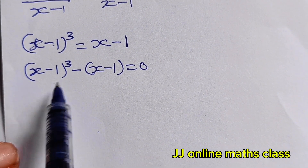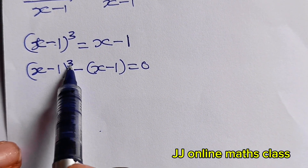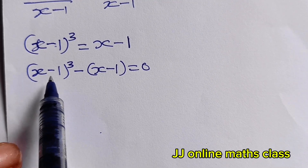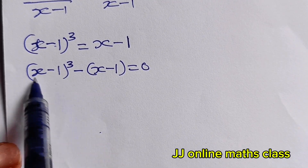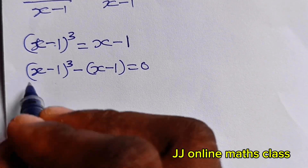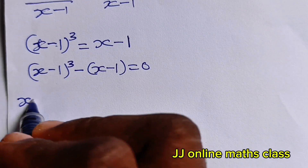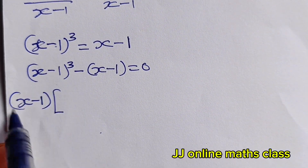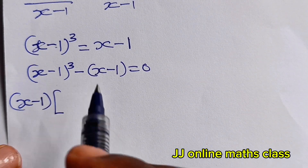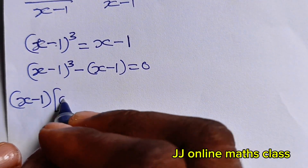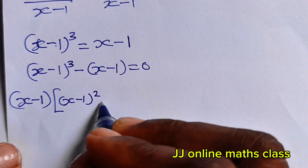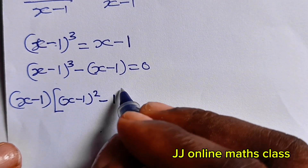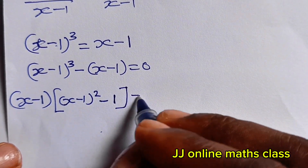You can see that (x-1)³ means (x-1) multiplied three times, so we can factorize (x-1) out. Bringing out (x-1), two factors remain, giving us (x-1) times [(x-1)² minus 1] equals 0.